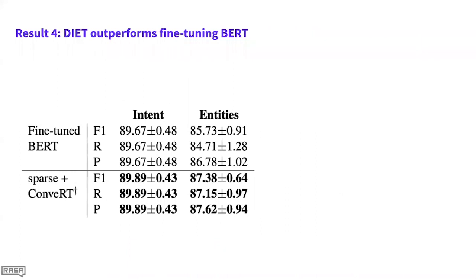Result four is that DIET outperforms not just using BERT as a featurizer, but it actually outperforms fine-tuning the whole BERT model. Fine-tuning a large language model is something people are keen to try these days, but it's very computationally intensive and typically quite sensitive to the learning rate and other hyperparameters. We show that using DIET with sparse features and ConveRT as featurization, without any fine-tuning, outperforms fine-tuning the BERT model — and it's six times faster to train.